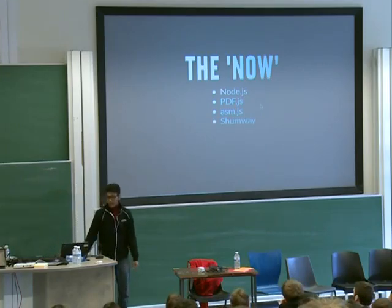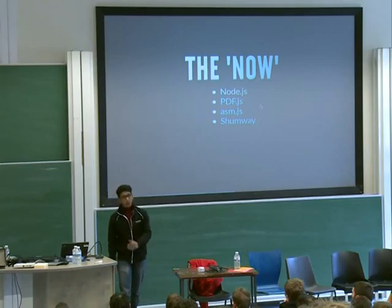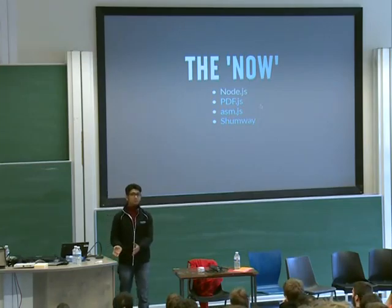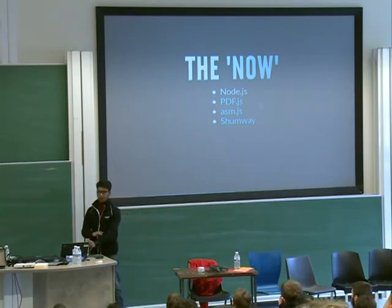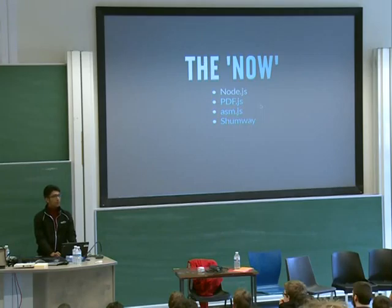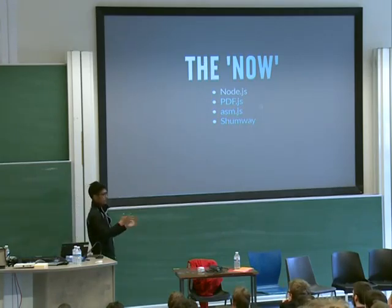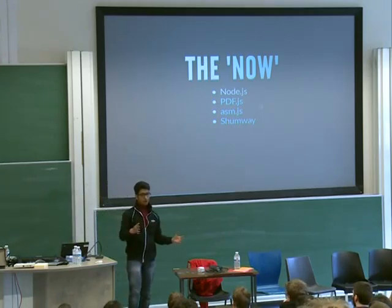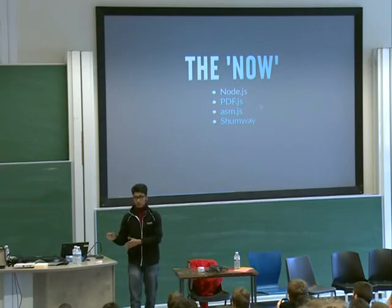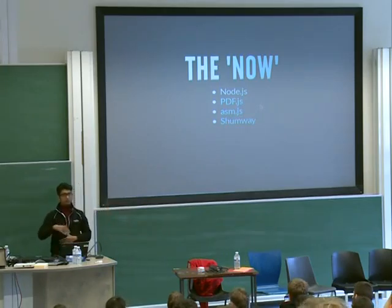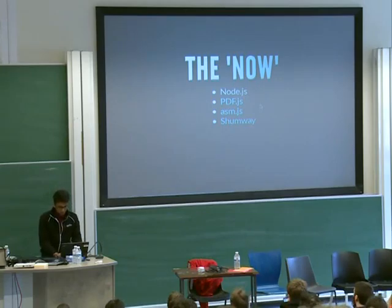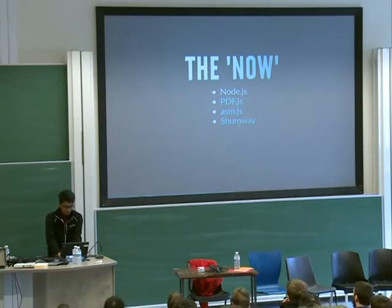asm.js is basically a subset of JavaScript to do something that can actually be done better in C or C++. So you can technically do something in C/C++, but if you don't know how to do that in JavaScript, you do it in asm.js and then use asm.js to run that in the browser — compile it into JS and then run it.